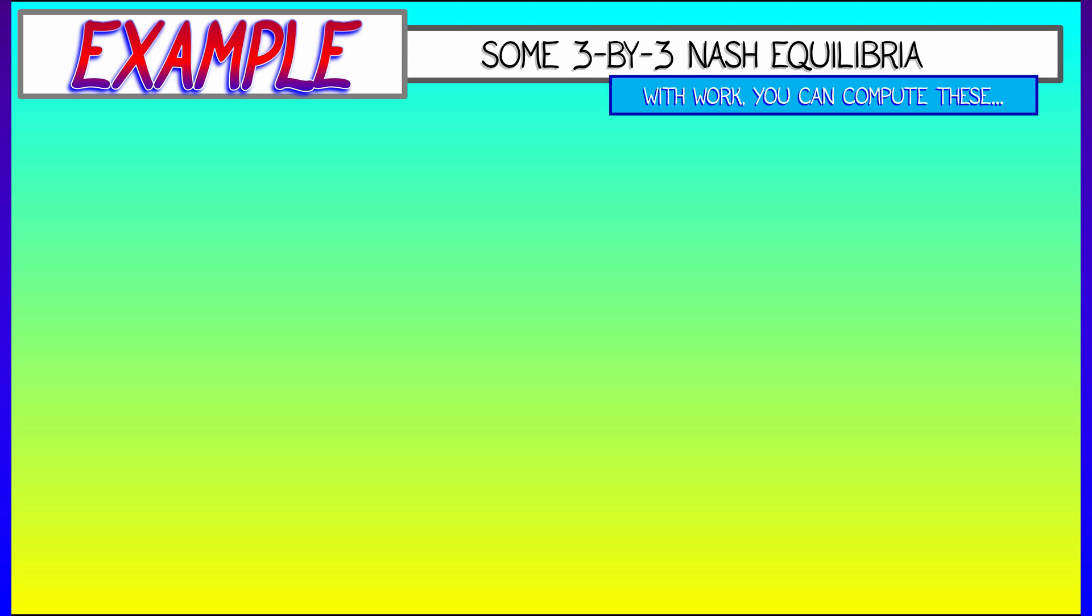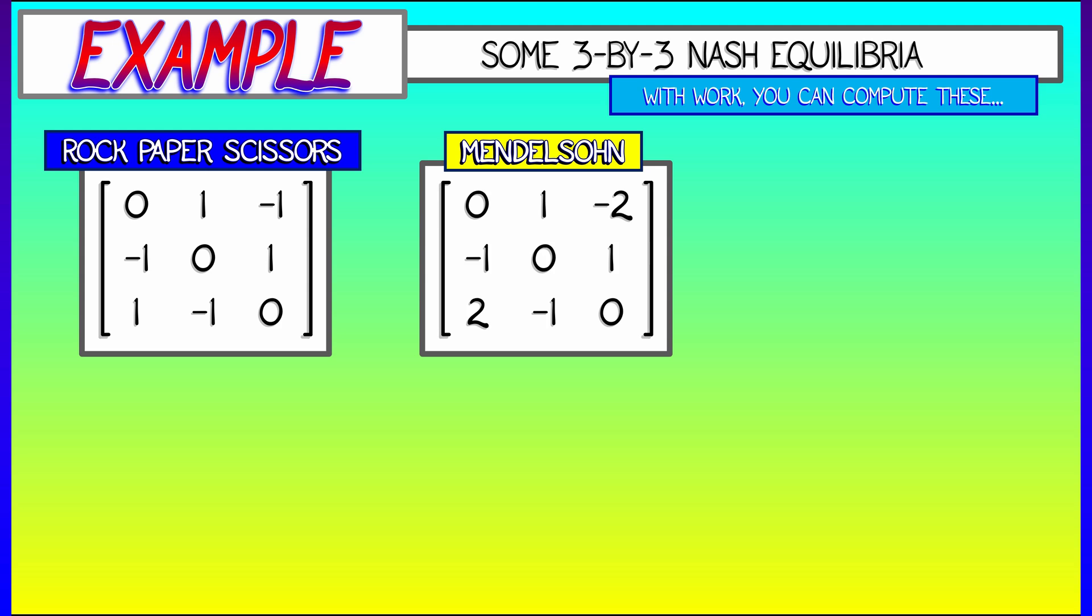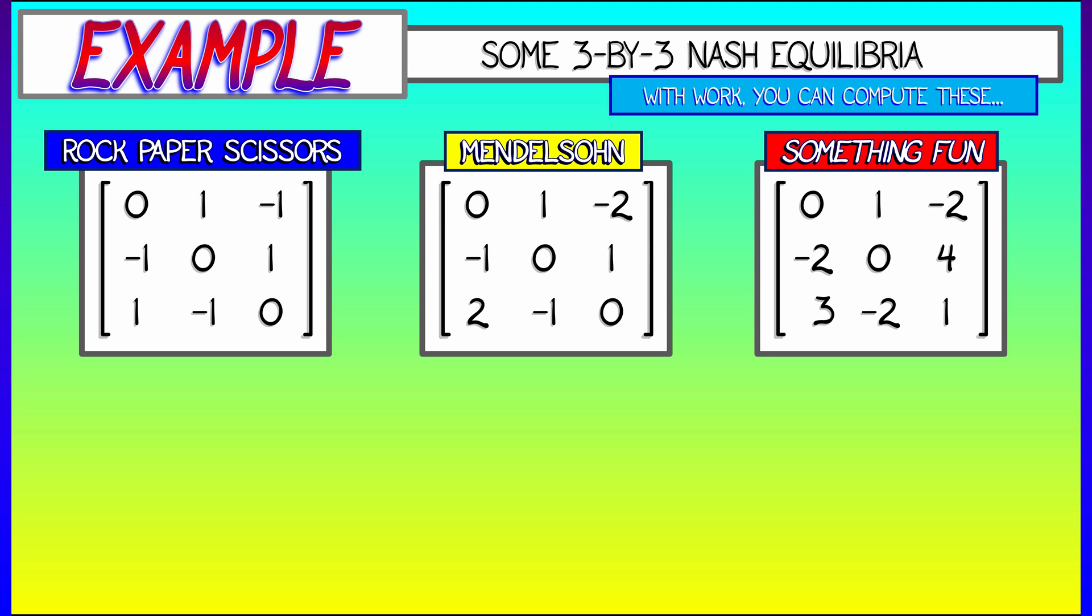Look at some examples of some three by three Nash equilibria that you could compute with a little bit of work. So remember the payoff matrix for rock, paper, scissors, and the payoff matrix for this Mendelssohn game, and then something fun, just something at random that I wrote down.